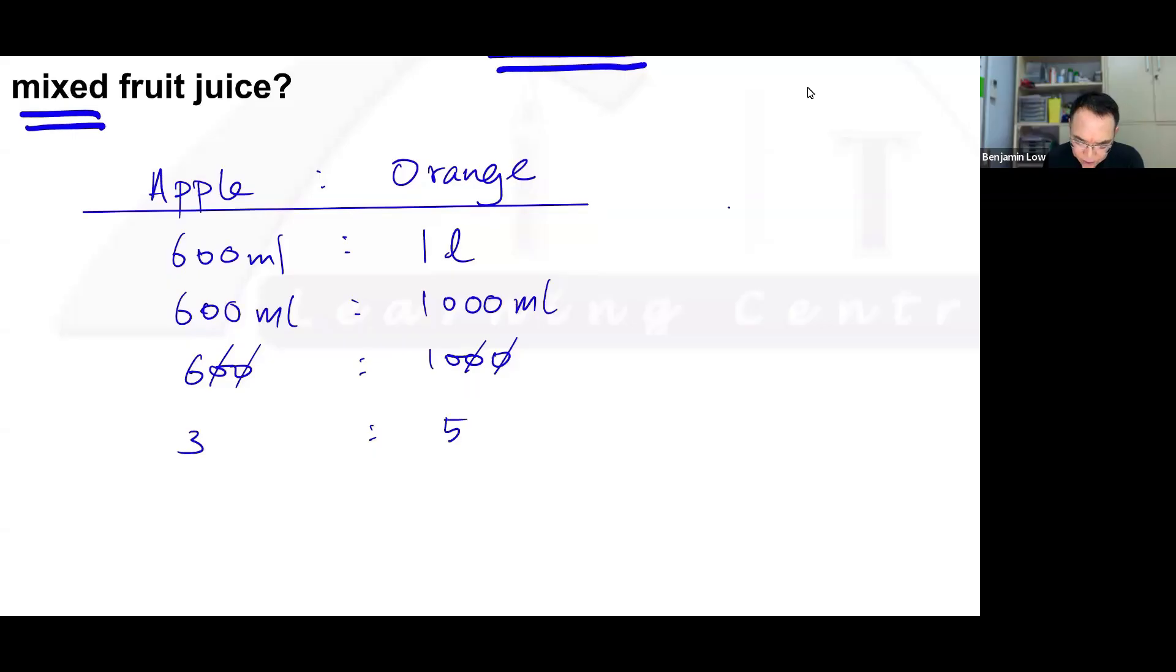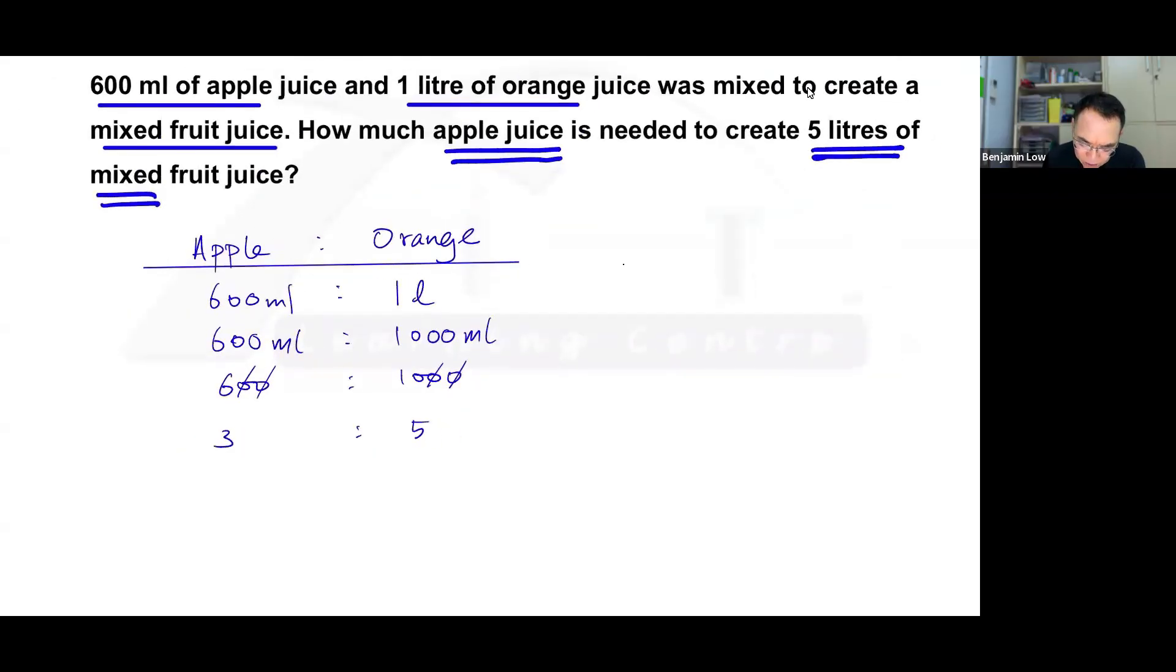When you mix them together you get what we call a mixed fruit juice. This means that for every 3 units of apple juice, you will need 5 units of orange juice, and together they will make 8 units of mixed fruit juice.